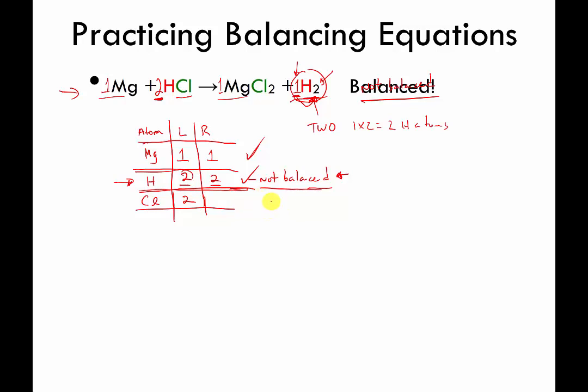So if there are two Hs, we've already accounted for that. There are two chlorines. So we put a two there. How many chlorines are on the right? Well, there's a one in front of this molecule, and there's a two that's a subscript next to the chlorine. So we do one times two. There are two chlorines as well. So everybody's balanced. Magnesiums we have one on the left, one on the right. Hydrogens we have two on the left, two on the right.